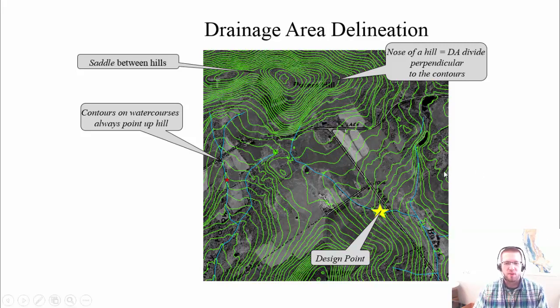So you want to start from your design point, and then go up into the watershed, going perpendicular to the contours. And when you're doing your delineation, you'll be looking for hills surrounding the watershed, and you'll be connecting lines between the hills. So in this watershed, these two hills represent border points on the watershed, and the other border point is this saddle between the hills.